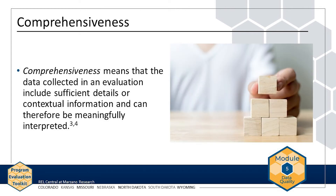Now let's consider comprehensiveness. Comprehensiveness means that the data collected in an evaluation includes sufficient details or contextual information, and can therefore be meaningfully interpreted. For example, if the AMP evaluation team wants to understand barriers that prevent students from completing their math homework, the team would likely be missing an important barrier if the data does not include students' socioeconomic status.